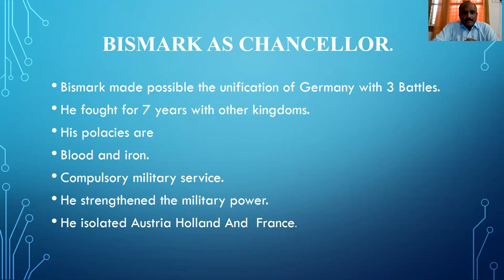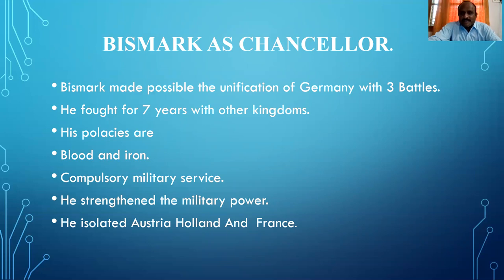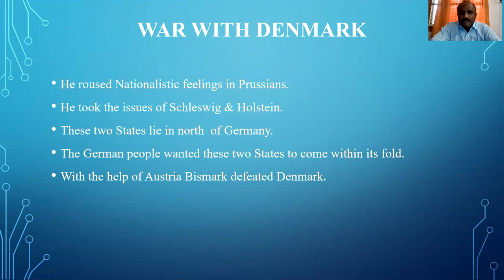Bismarck initiated a new rule of compulsory military service — every citizen had to extend support to the nation in time of war. He strengthened military power: nearly 40 to 60 million army strength was increased under Bismarck. He also isolated Austria, Poland, and France one by one, maintaining friendly relations with one nation while fighting another, and defeating all three kingdoms in sequence.